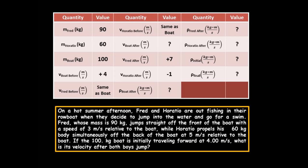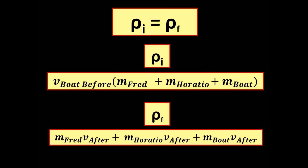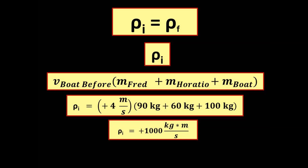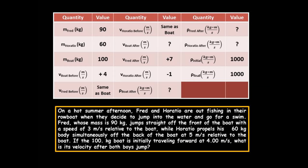The initial momentum equals the final momentum. The initial momentum is the velocity of the boat before the boys jump times the sum of the masses of Fred, Horatio, and the boat. That initial momentum equals +1000 kilogram meters per second. Therefore, the final momentum will also equal 1000 kilogram meters per second, as shown in the table.